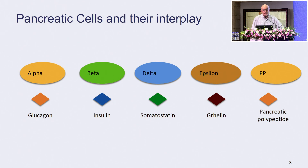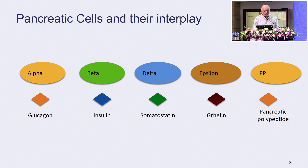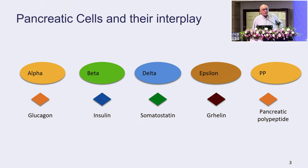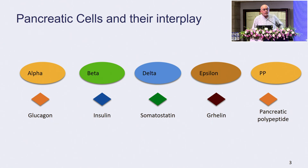Remember, these are the pancreatic cells: the alpha, the beta, the delta, the epsilon, and the pancreatic polypeptide-producing cells. We know very little about the beta cells. We know even less about the glucagon-producing alpha cells. We know absolutely nothing about the delta cell. We hardly know anything about ghrelin and certainly nothing about pancreatic polypeptide. And more importantly, we've just started understanding how they connect with each other.